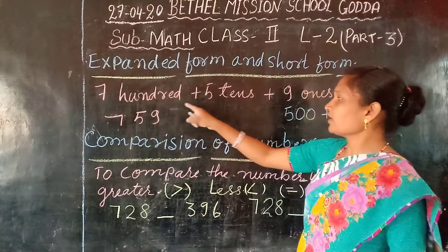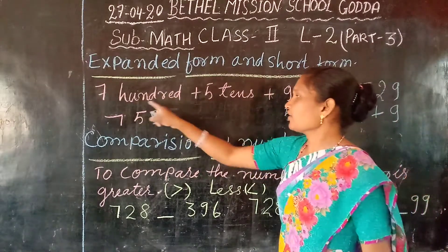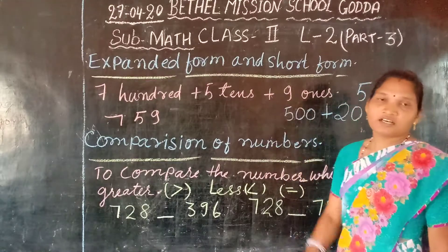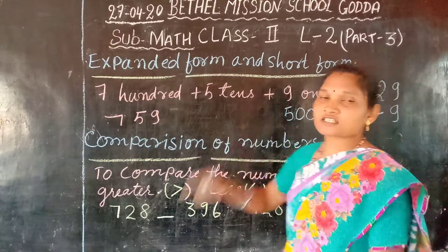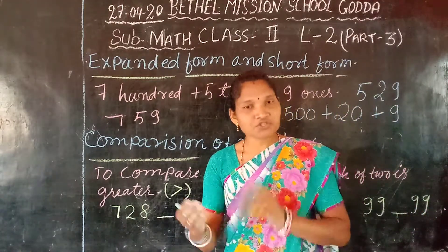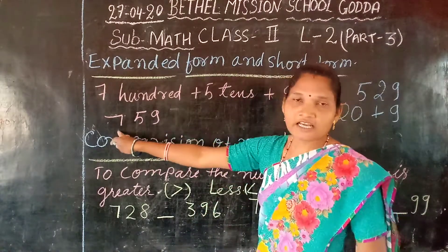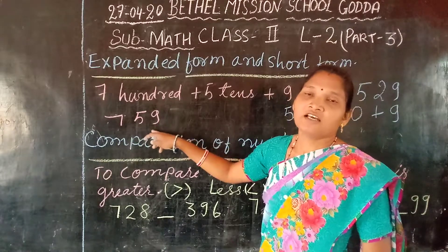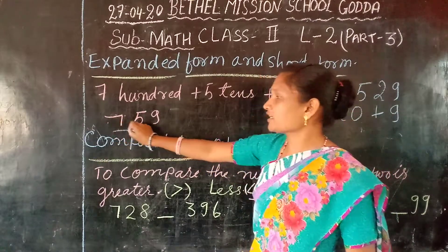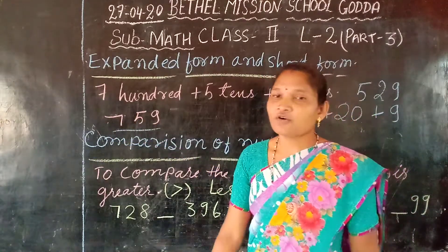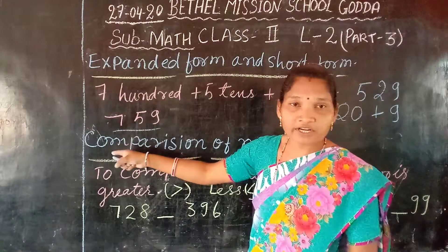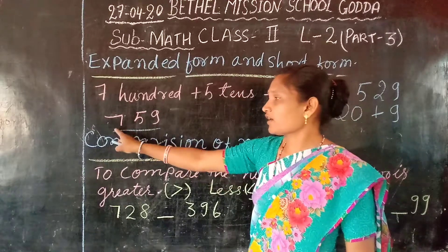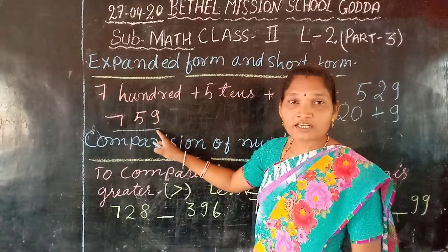The next is short form. For example, seven hundred plus five tens plus nine ones. Now how do you write this expanded form into short form? We write seven, five, nine. This is how we write the short form. But when we read, how do we read? Seven hundred and fifty nine.